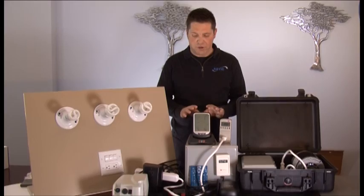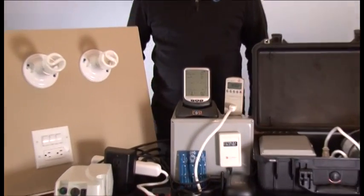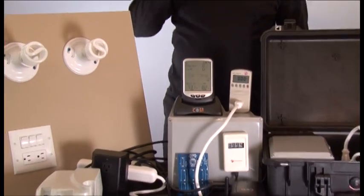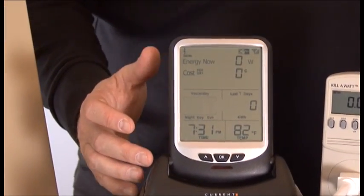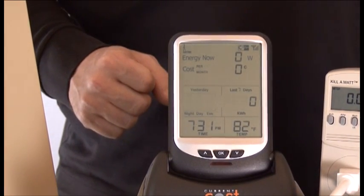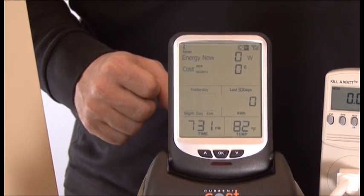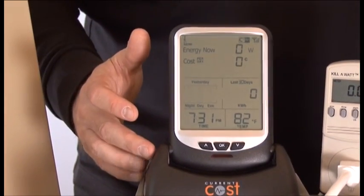The first one I'd like to introduce is the Current Cost by Envy. The Current Cost can be programmed for a monetary value that you pay for power. In Montana, where we are right now, we pay 9.9 cents a kilowatt, so we have this meter set at 10 cents.